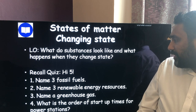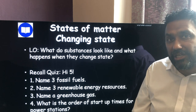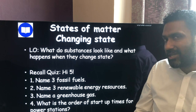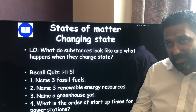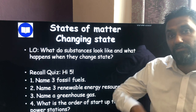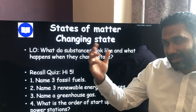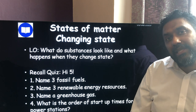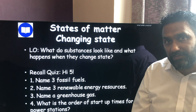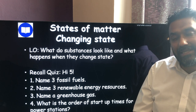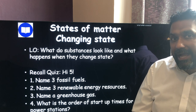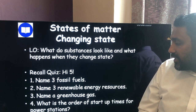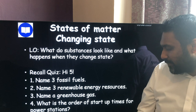The main greenhouse gas is carbon dioxide, though you could also say methane. For the order of startup times: the slowest is the nuclear power station, which takes approximately two days. Next is the coal-fired power station, which can take up to about a day. Then the oil-fired power station, and the quickest — about half an hour to an hour — is the gas-fired power station.